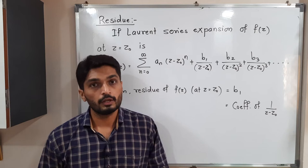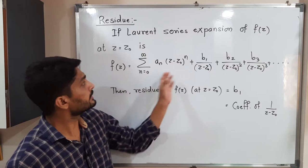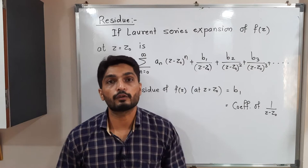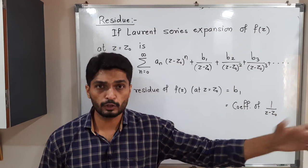You know that Laurent series has two parts: analytic part and principal part. As you can see here, f(z) has a Laurent series at z = z₀. This is the analytic part and this is the principal part. In the principal part, the bracket in the denominator is (z - z₀), then (z - z₀)², then (z - z₀)³, and so on. How many terms will be there, we don't know.